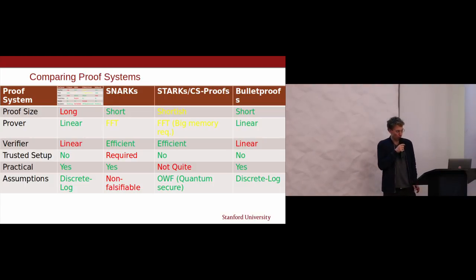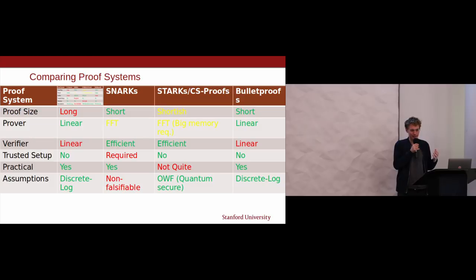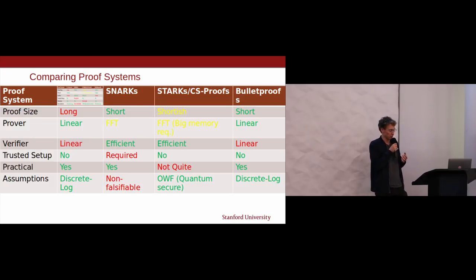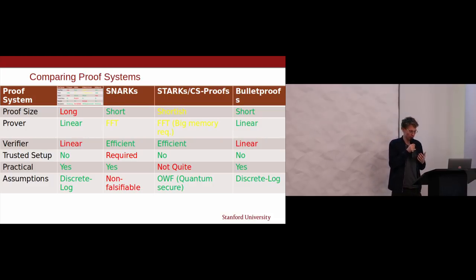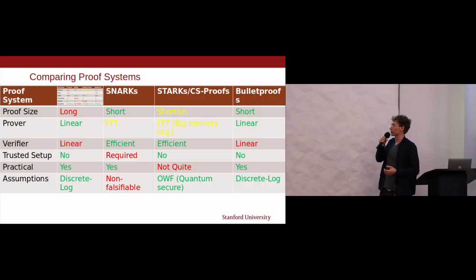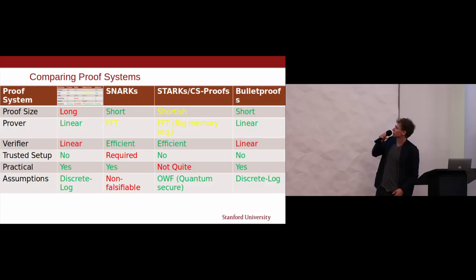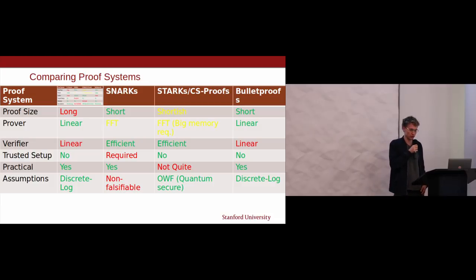Now let's discuss all these different proof systems with different trade-offs. There's no magic bullet that works for everything. Bulletproofs adds a different set of trade-offs. Sigma protocols are classical, simple proof systems you'd find in a cryptography textbook — proof sizes are long but no trusted setup. Bulletproofs clearly improves on them with shorter proof sizes. Both are asymptotically linear in verification, but Bulletproofs verification is extremely fast in practice.